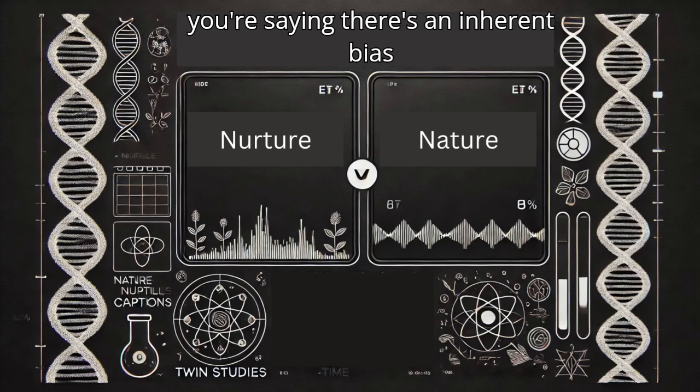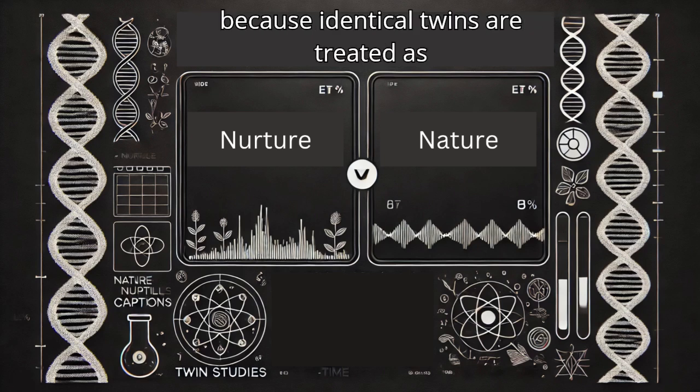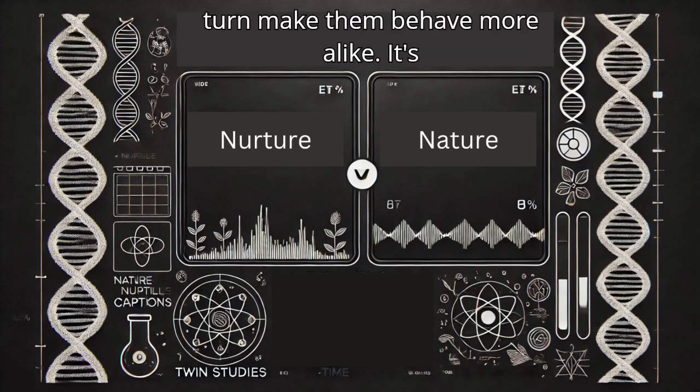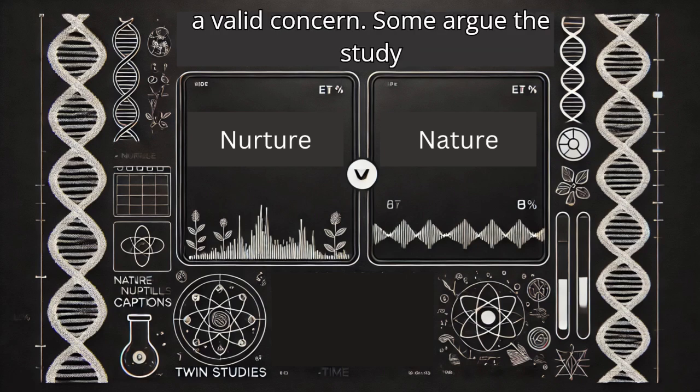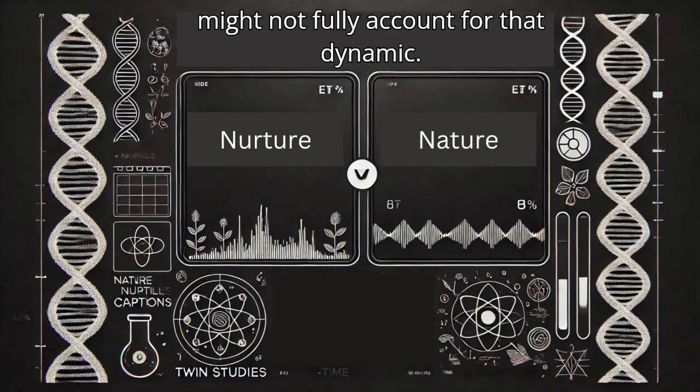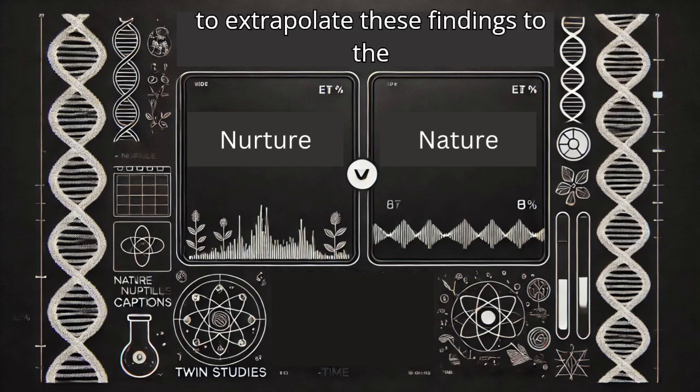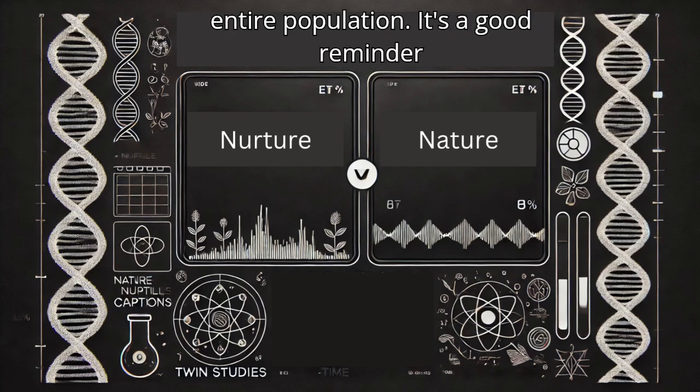So you're saying there's an inherent bias because identical twins are treated as more alike, which could in turn make them behave more alike. It's a valid concern. Some argue the study might not fully account for that dynamic. There's also the question of generalizability. The study's sample size, especially those twins raised apart, was relatively small.